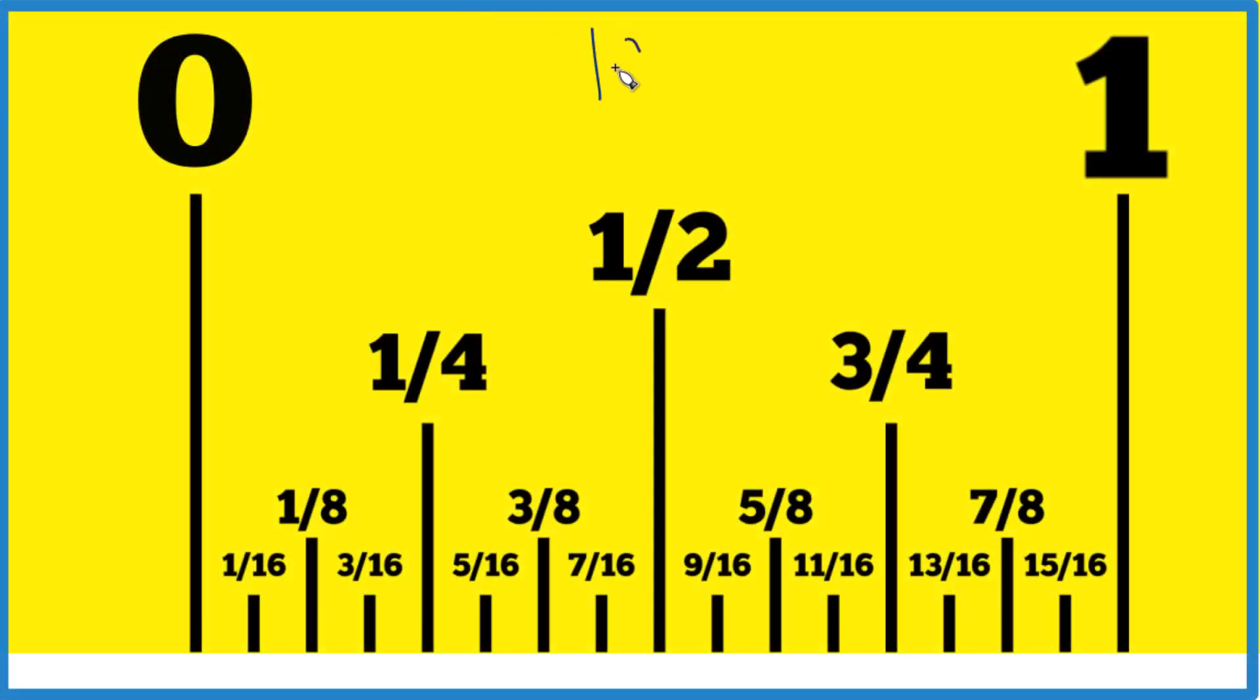So, 19/32 of an inch - where is that on a ruler or tape measure? One way to think about it is we have our one inch right here. We're going to cut it in half, that gives us half an inch.